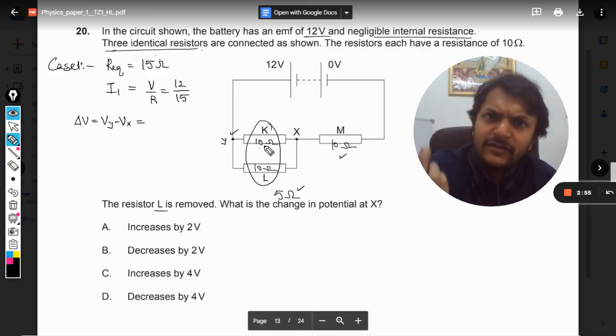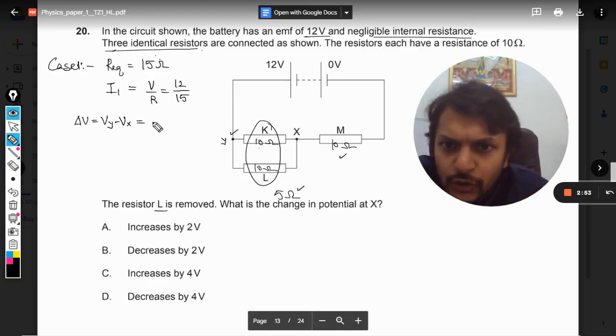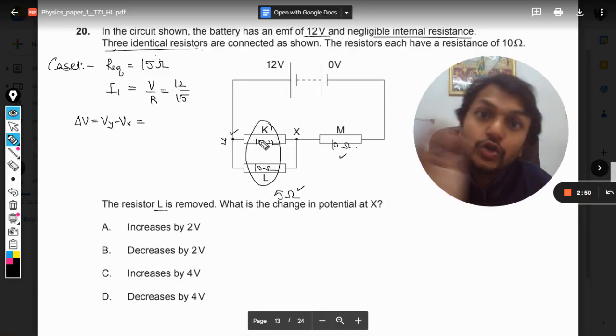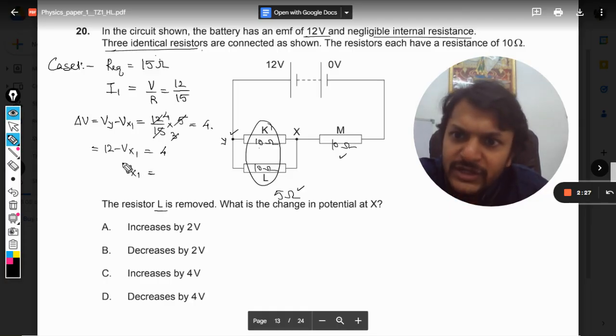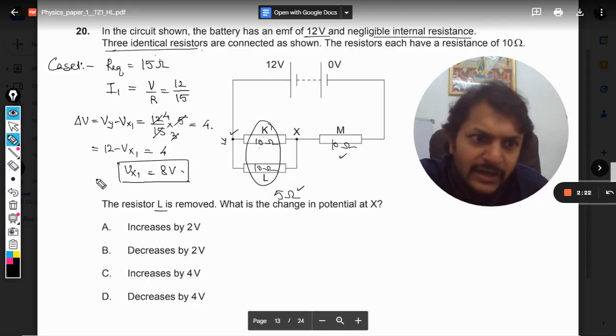So the resultant is 5 and the current, the total current that is passing through 5 ohm is 12 by 15, so it will be 12 by 15 multiply by 5 ohm, so it will become 4. And this Y, it can be taken as 12, so it will be 12 minus Vx1, because it is the case number one. So Vx1 will come out to be 12 minus 4, and that is 8 volt. So this is our case number one.